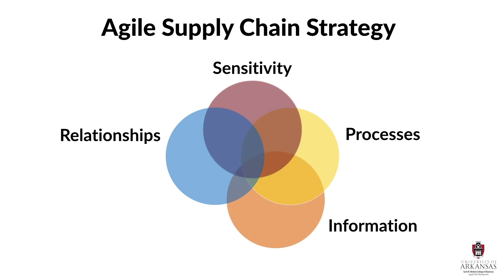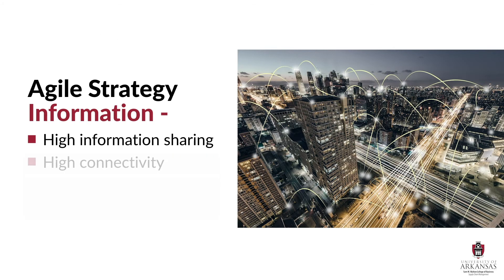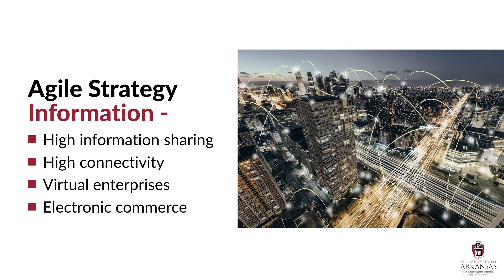Leveraging information is important in any supply chain, but it's even more important in agile supply chains. Supply chain partners need a high degree of information sharing. This requires them to have a high degree of connectivity and even being virtually integrated. Leveraging information is key to collaborative efforts for relationships and for sharing market sensing insights in a changing environment. When supply and demand uncertainty are high, one of the best ways to combat this difficult situation is to share information in a timely and accurate format.